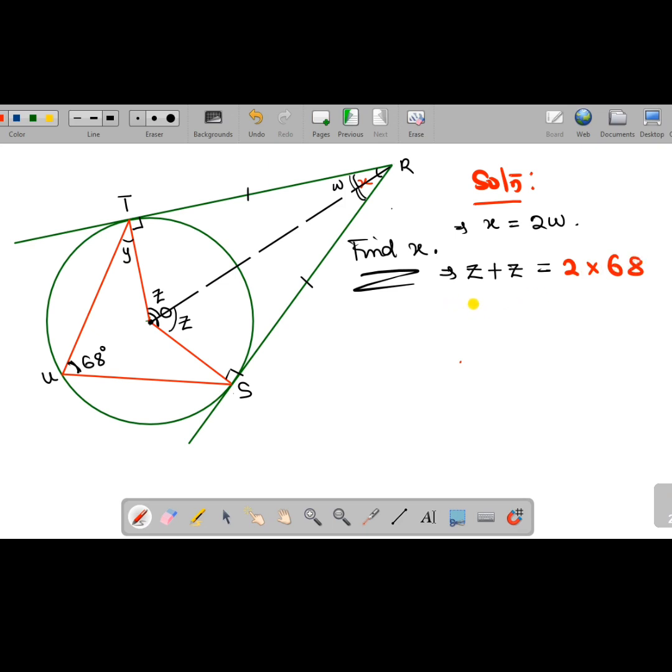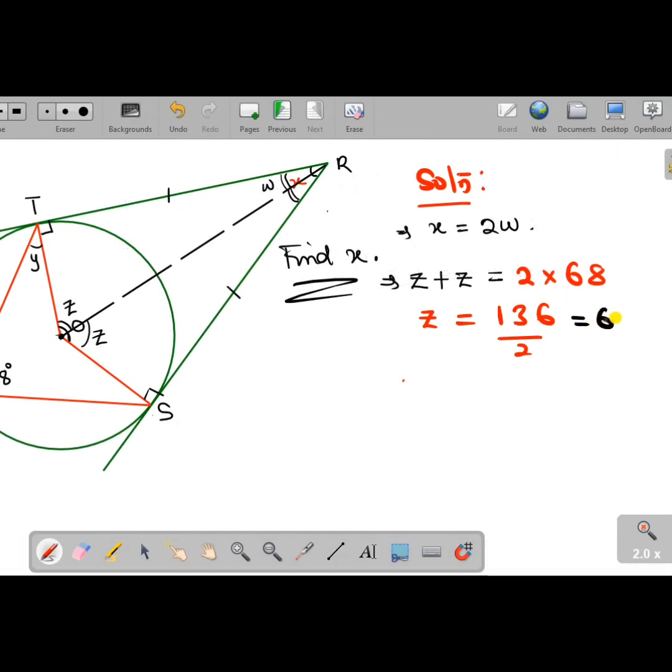That means 2z equals 2 times 68, so z alone is 2 times 68 over 2, which is 136 over 2. So my z alone is actually equal to 68 degrees.